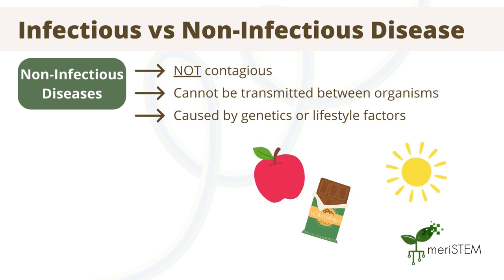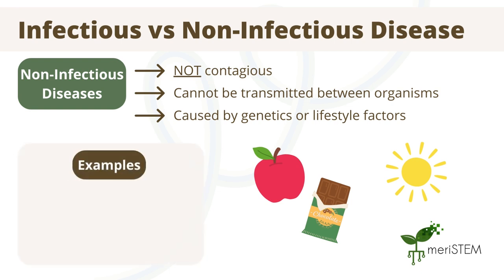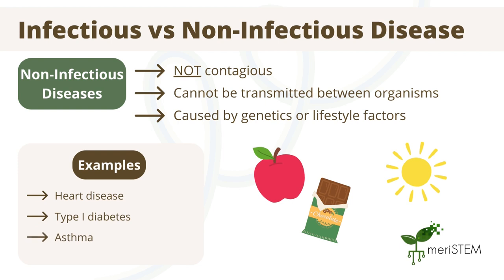For example, UV radiation can cause melanoma and skin cancer, and a poor diet can contribute to developing type 2 diabetes. Other examples of non-infectious diseases can include heart disease, type 1 diabetes, and asthma.